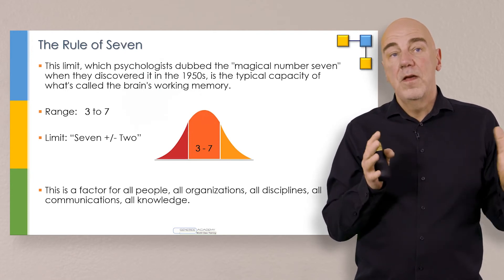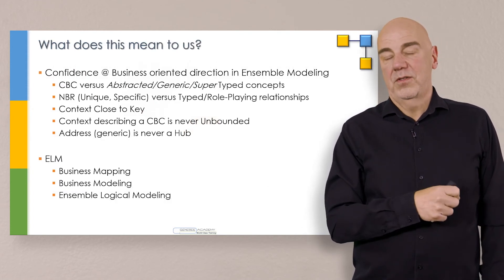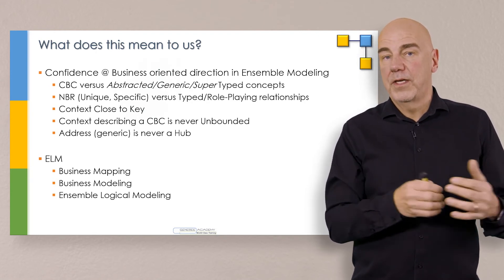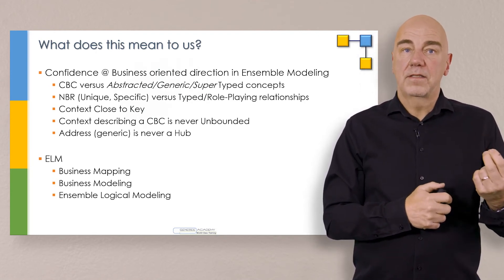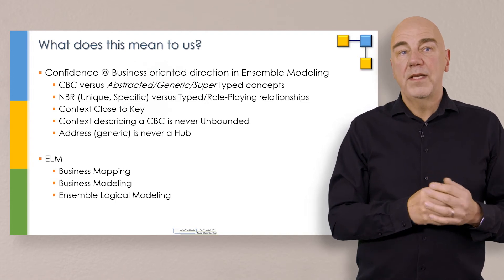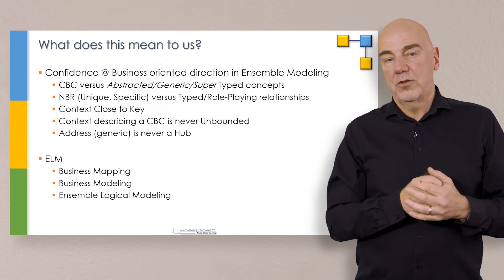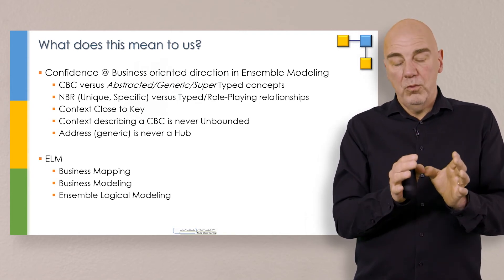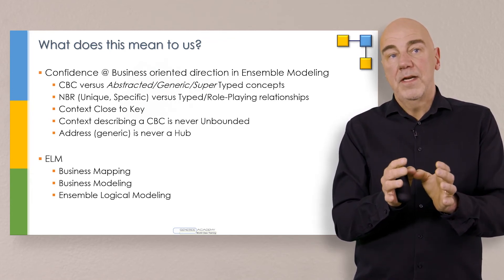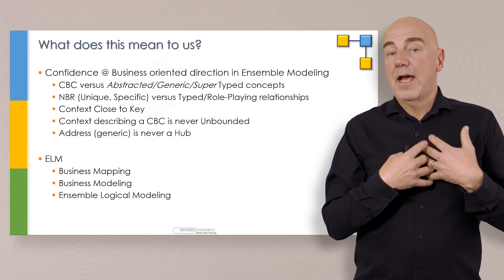What does this mean to us, you might ask? And of course that's why this video keeps getting brought up as a topic or as a recommendation from other videos. This gives us confidence in the business oriented direction we take with ensemble modeling for business. Why? Because our core business concepts don't need to be abstracted or generic or typed. Because if we go directly with the core business concepts being used, we can be confident they will fall into the categorization of three to seven. They will not be unbounded. In other words, they will not get overly complicated because they have to be managed and understood by people.